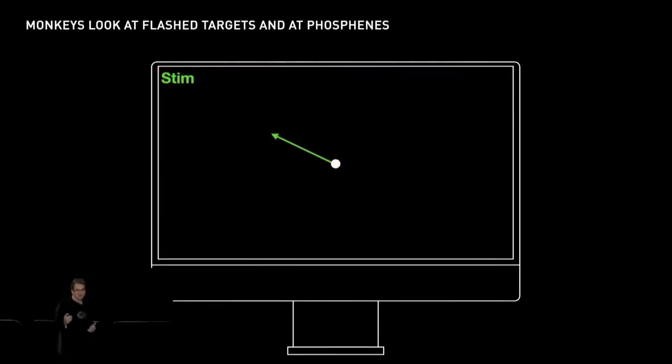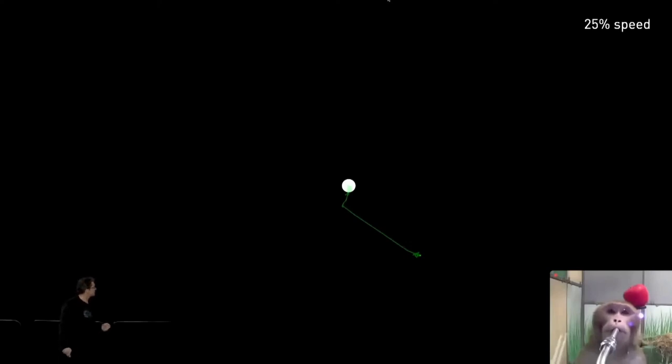Let's look at Code performing this task. I want to show you first at one-quarter speed. There's a visual flash, and he makes an eye movement towards it. The monkey can only see what is white on this screen. He can't see his own eye movement, and he certainly can't see when we stimulate. But here we stimulate, and he makes the same saccade to the same location because we stimulated the same electrode. Nothing appears on the screen at that time, and he has no other cue to make that eye movement.